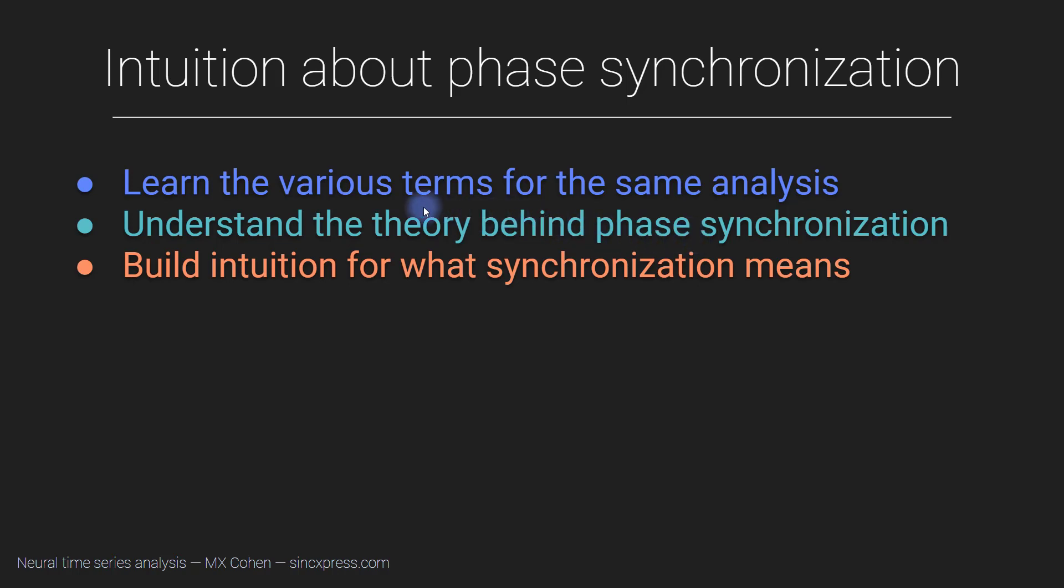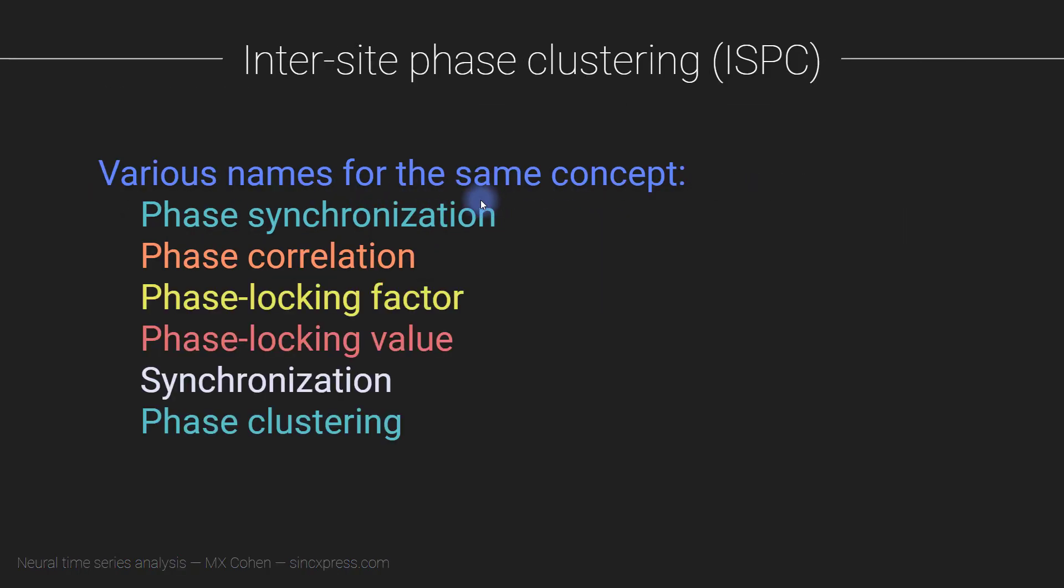But let me actually begin by talking about terminology. Unfortunately, there are many names in the literature that are used for the same underlying concept. So the concept is that we are looking at a clustering of phase angle differences between two different electrodes, and you will see various terms in the literature, in the publication literature, that all refer to exactly the same procedure, exactly the same formula.